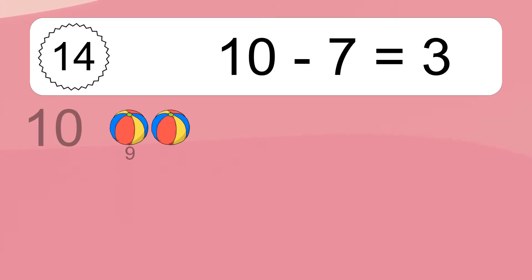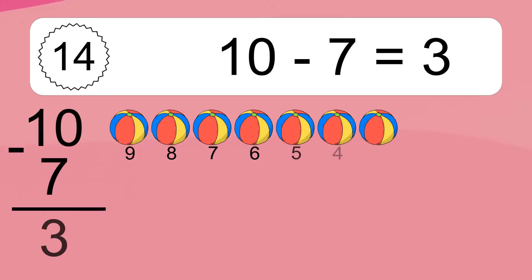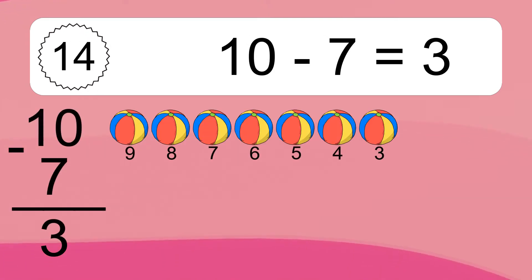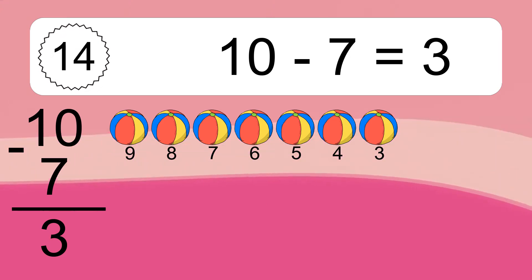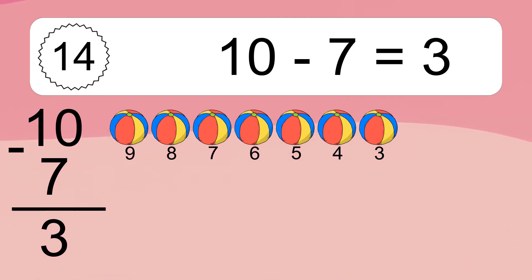10 minus 7 equals what? 10 minus 7 equals 3. Let's count it: 9, 8, 7, 6, 5, 4, 3.